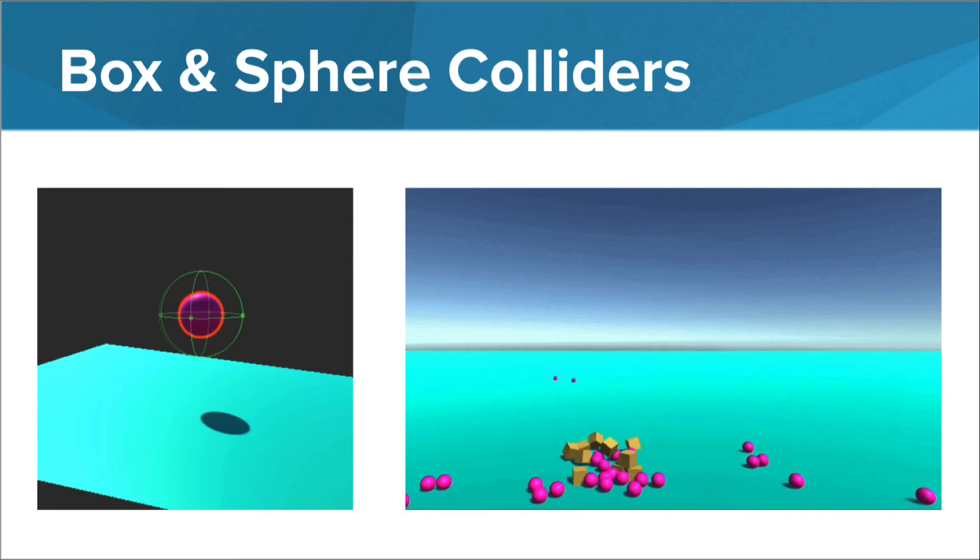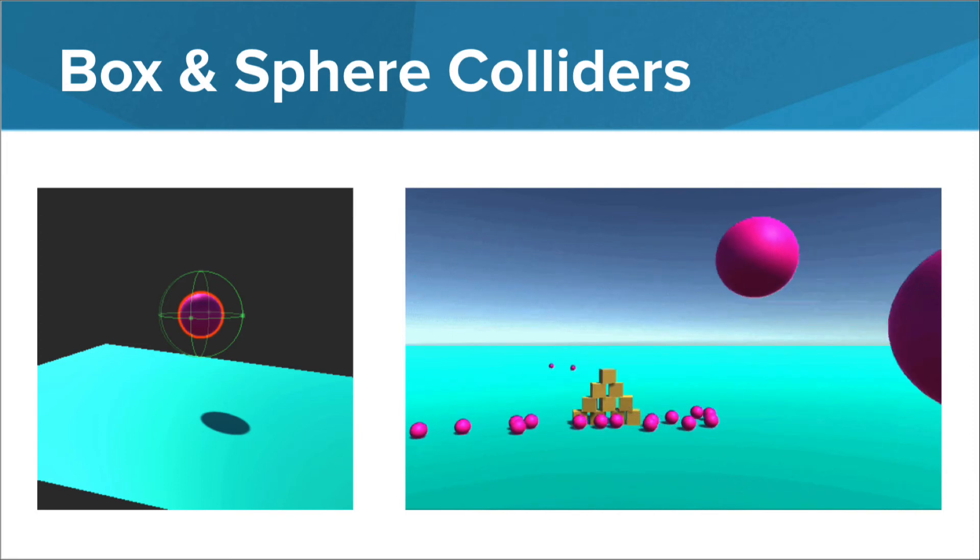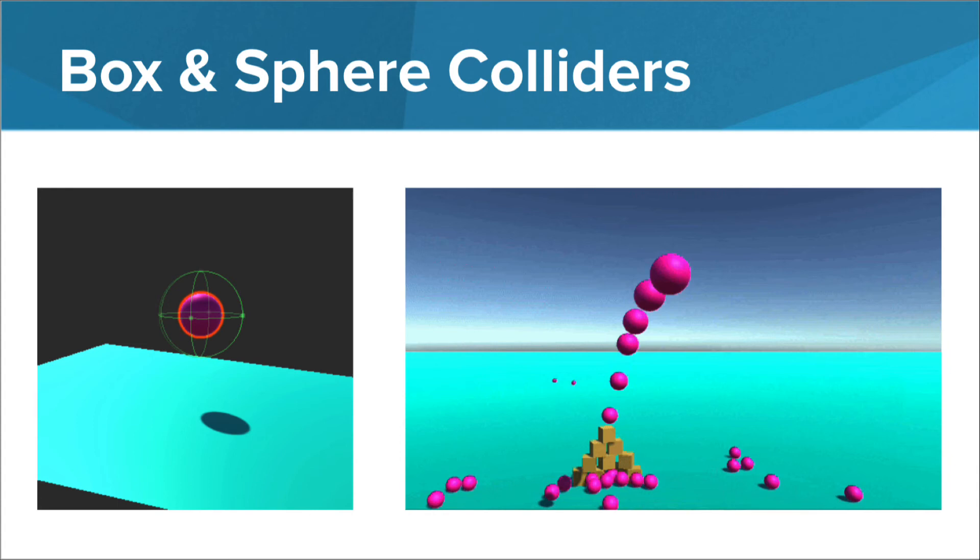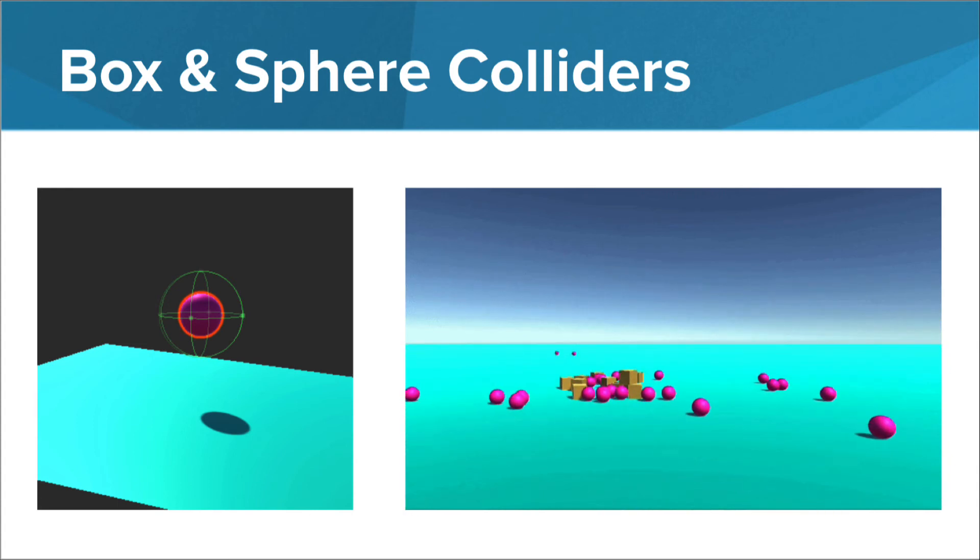The rigid body component on all of these game objects tells Unity how much mass they have and whether or not they should fall to the ground with gravity. This creates a falling box effect when the boxes are hit by the balls.